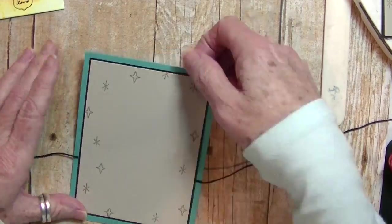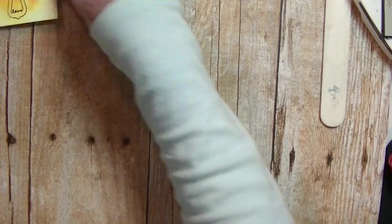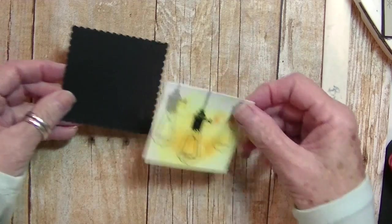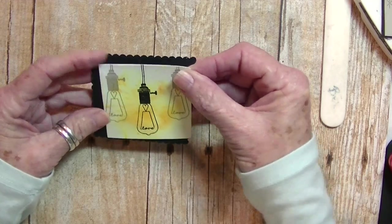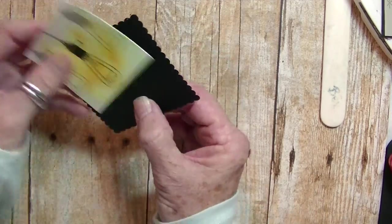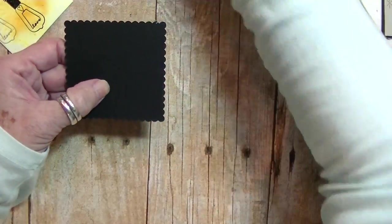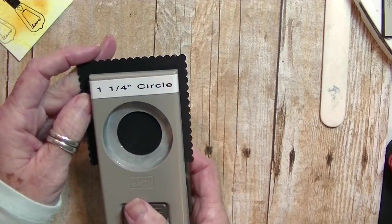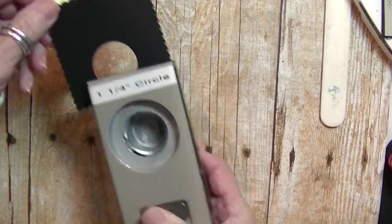And now we'll get to the good stuff - working with the Chibitronics. I wanted to layer the light bulb on a black contrasting layer, so I need to punch a hole for the little LED light to show through.